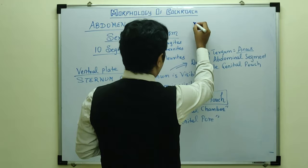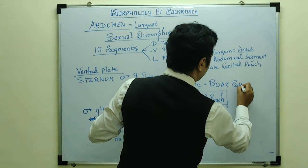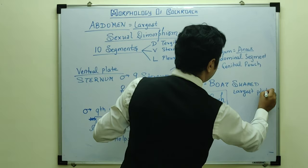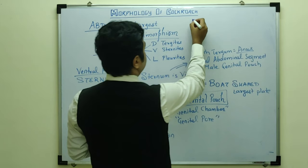In the female cockroach, the 7th sternum is boat-shaped and in fact is one of the largest plates present. It is divided into the genital chamber and genital pore. The 10th segment is the last visible segment in the abdomen.